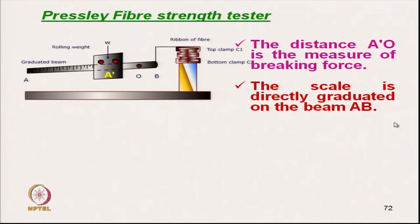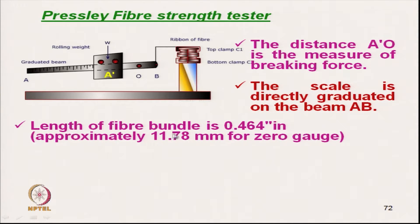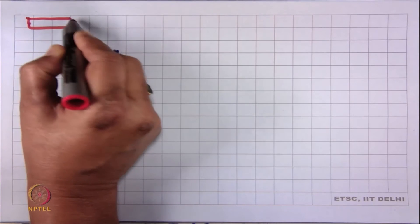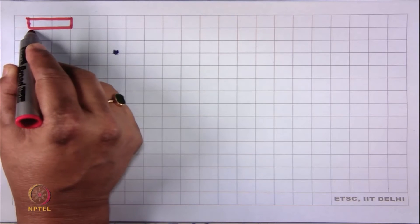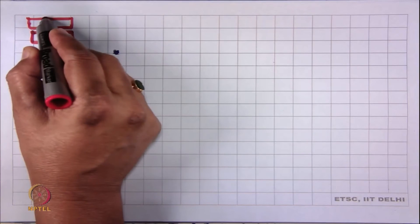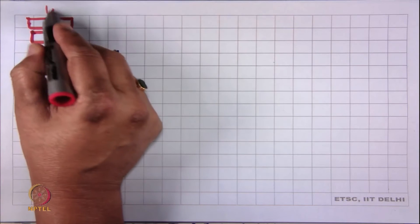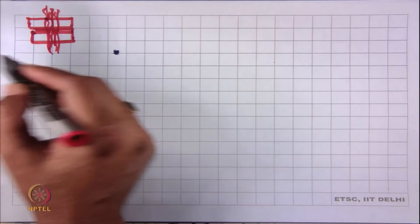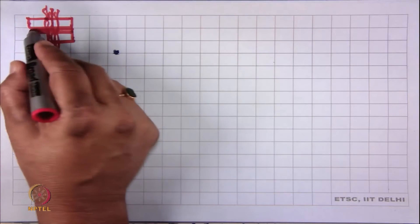The scale is directly graduated on the beam in terms of grams per tex. The length of the fiber bundle is 0.464 inch at zero gauge length. Now let us see — at zero gauge length, this is the clamp. In the bottom clamp, the fiber bundles are fixed, and at zero gauge length there is no gap. The stelometer can work at a 3 millimeter gauge length, but here the gauge length is zero.